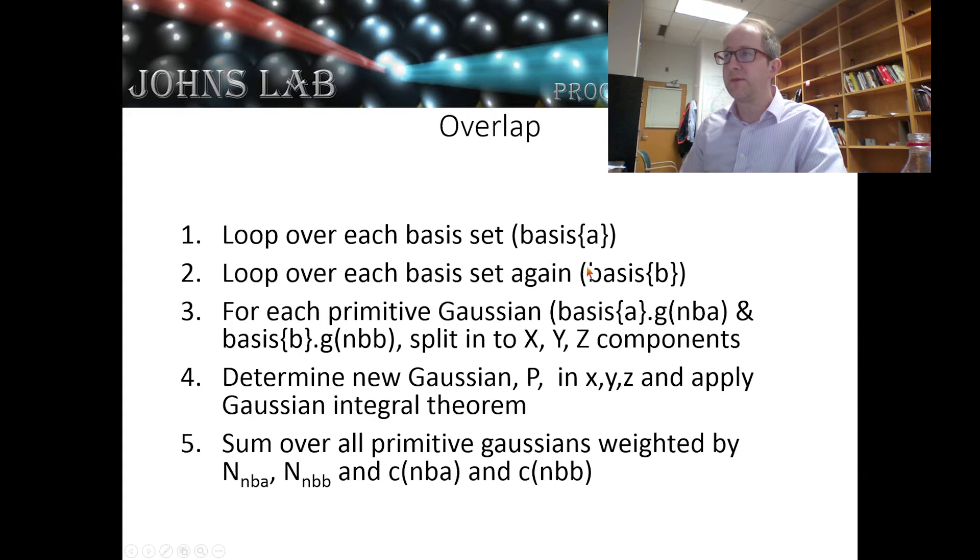For each a and b basis function, we'll sum over all the primitive Gaussians that come out. We'll weight them by their appropriate normalization constants, contraction coefficients, and then sum them to get our matrix element S sub a,b.